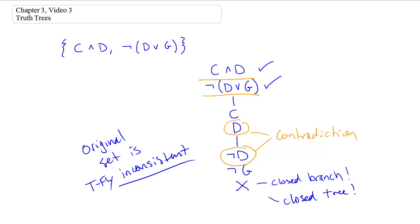That means the original set is truth functionally inconsistent. What we've done is systematically searched for a truth value assignment that would make both members of the set true. In doing so, we were forced into a contradiction. Therefore, there is no truth value assignment that can make both members true, so the set is inconsistent. Let's look at another example before we examine the rules that are applied here.